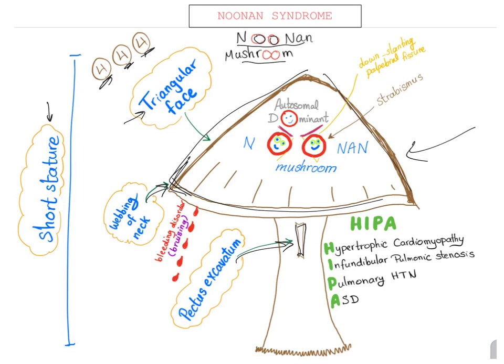Those are the four major items: short stature, triangular face, webbing of the neck, pectus excavatum. Then we have four letters — HEPA: hypertrophic cardiomyopathy, infundibular pulmonic stenosis, pulmonary hypertension, and finally ASD. That's the four letters.